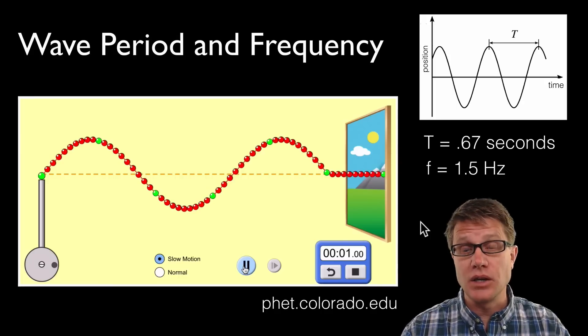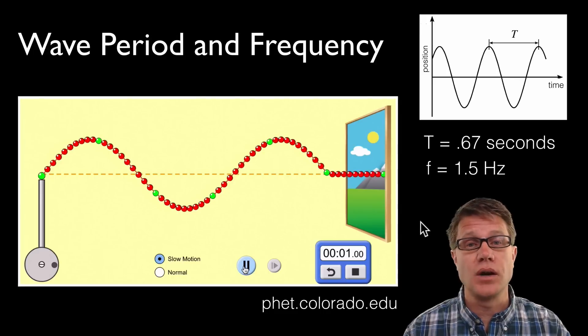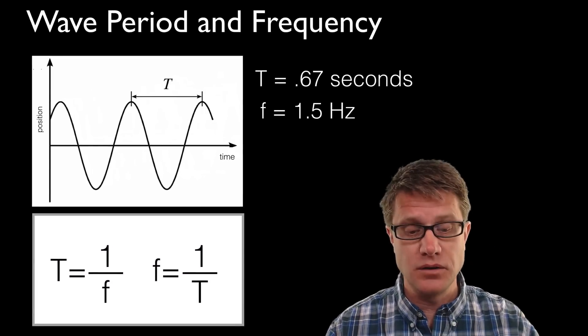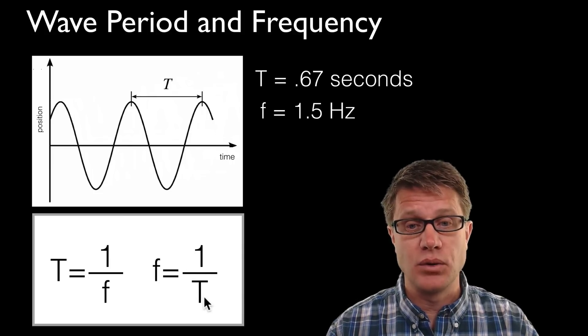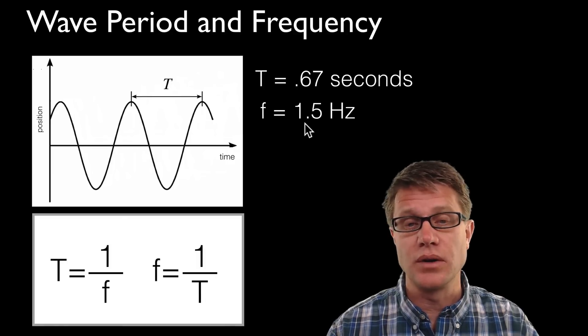Now we could have done it just by looking at the simulation, doing some experimentation, or we could just do it mathematically. If we want to convert from 0.67 seconds into frequency, all you do is take that period that we calculated, 0.67 seconds. We take 1 divided by 0.67 seconds and we'll get 1.5 hertz.